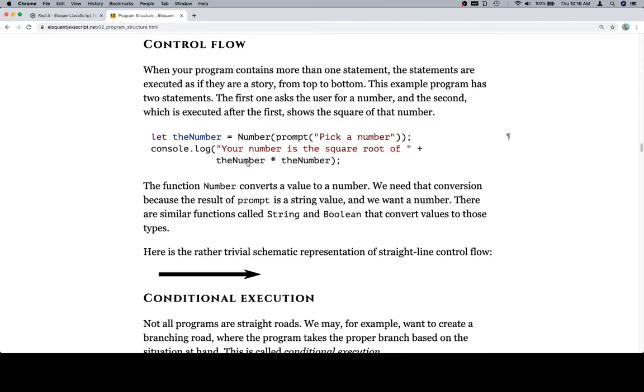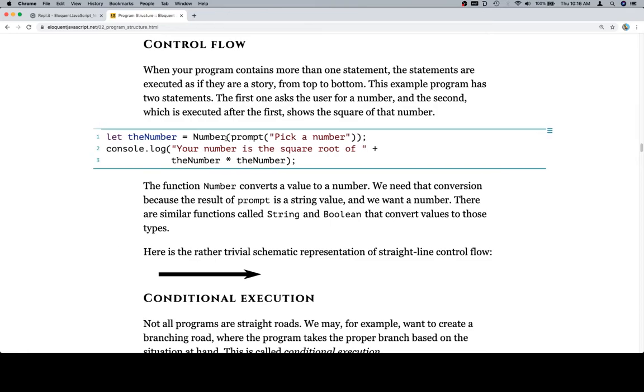The function Number converts a value to a number. We need that conversion because the result of prompt is a string value, and we want a number. There are similar functions called String and Boolean that convert values to those types.